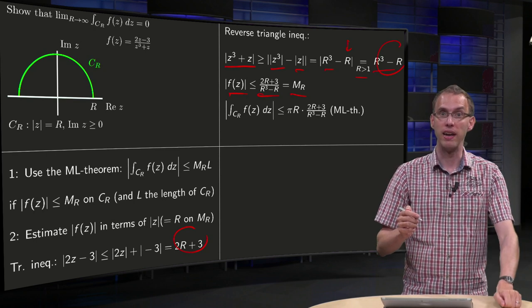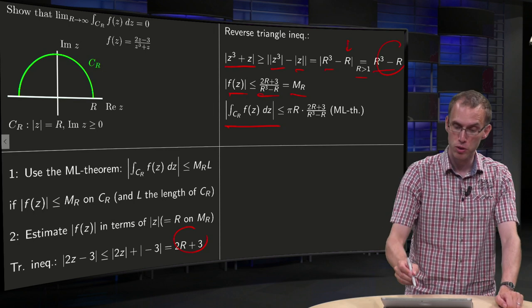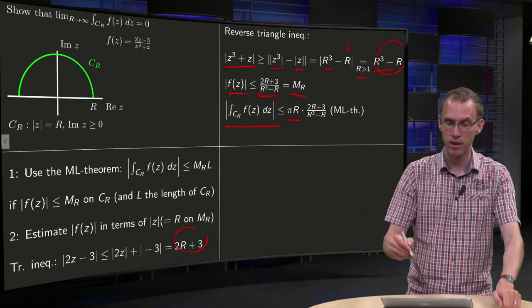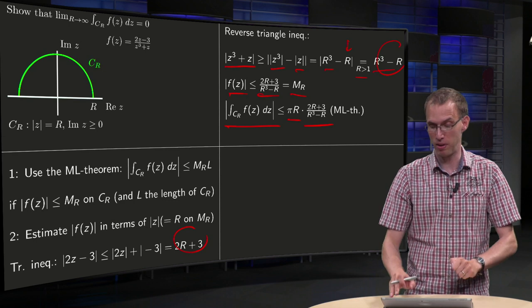Now we can apply the ML theorem so we know that the norm of the integral is smaller or equal than the length, pi times R times our MR. End of the ML theorem.